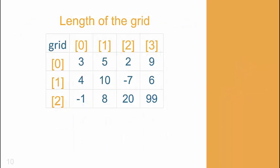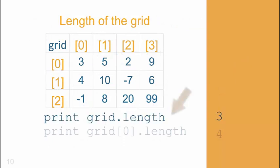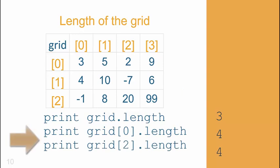Most languages will have a length command or process to detect the dimensions of the grid. This first statement shows how many rows are in the grid. These next two show how many elements are in a particular row, as you can see.